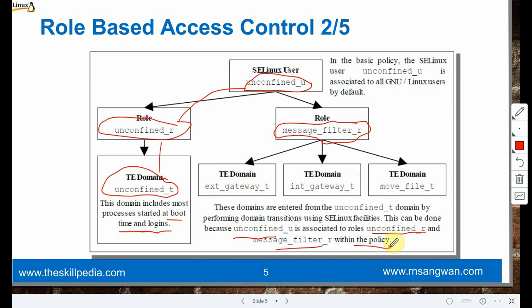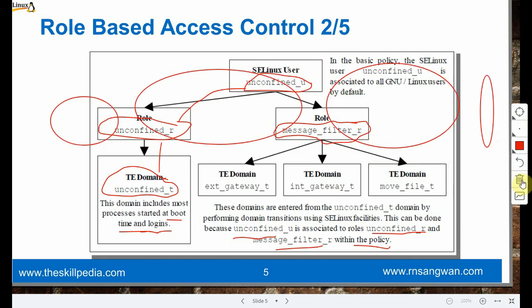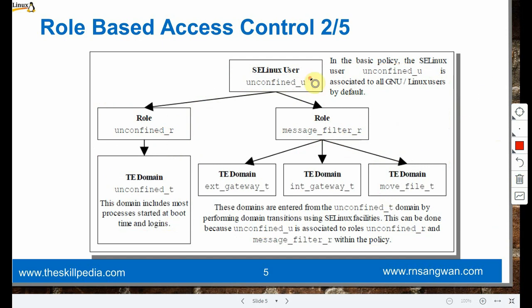We need to understand how type enforcement domains are organized - which comes under which role and what is the hierarchical placement. We have different categories of type enforcement under different roles and under different users. The broader picture is: user is controlled by role, which is controlled by type enforcement, which protects the actual file.